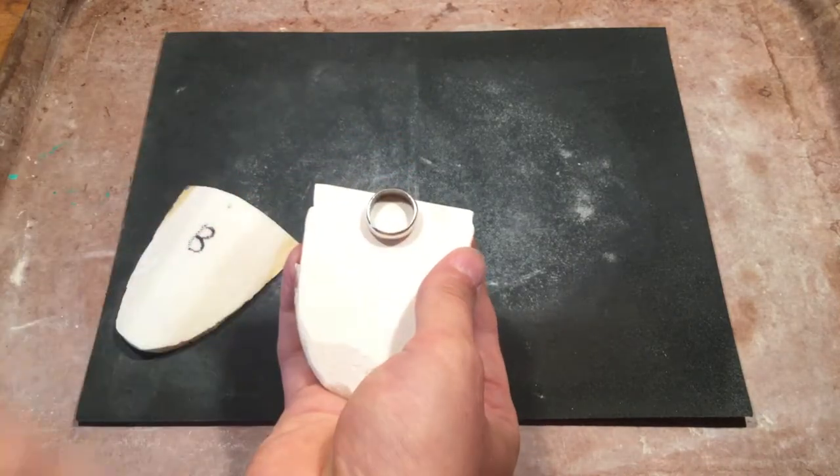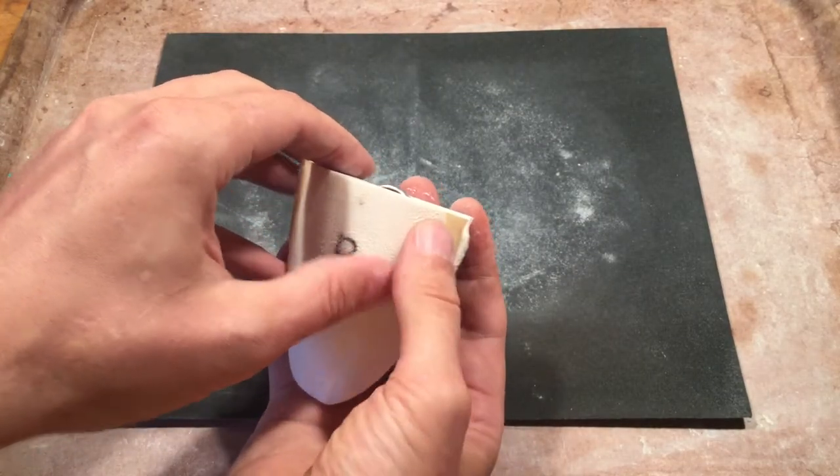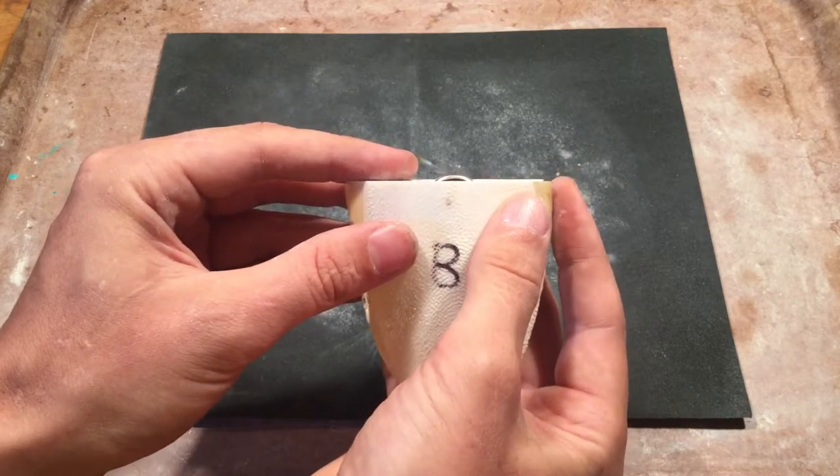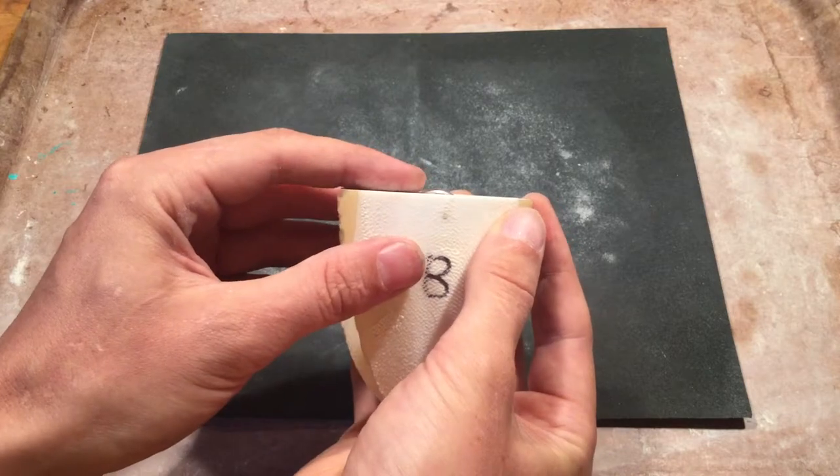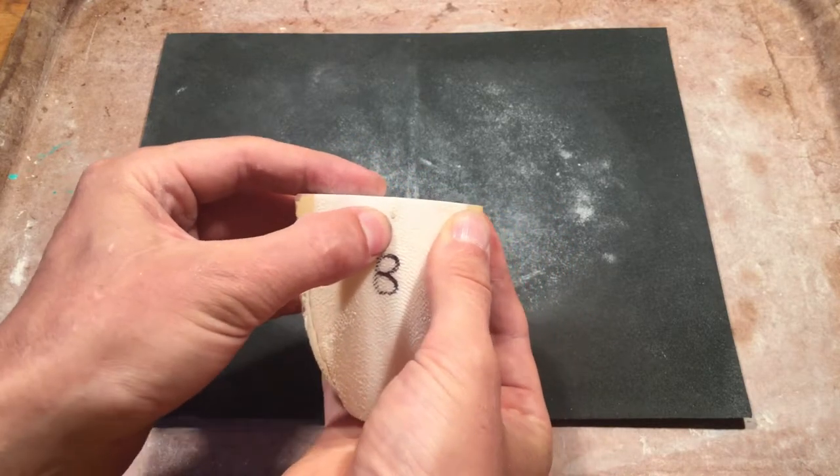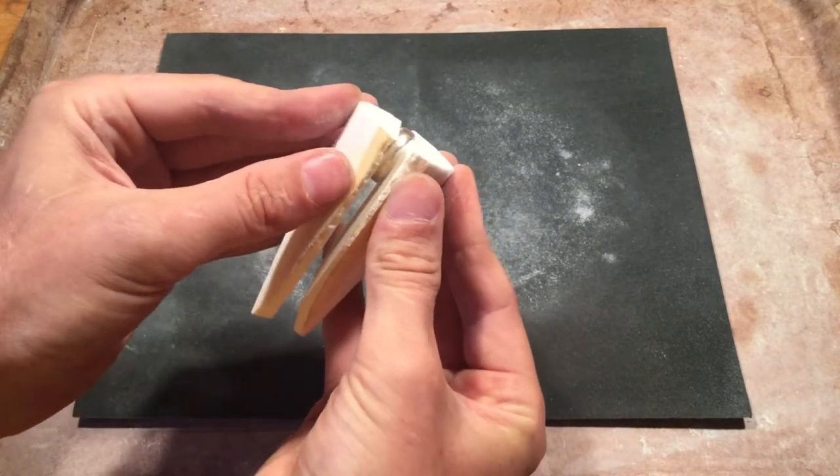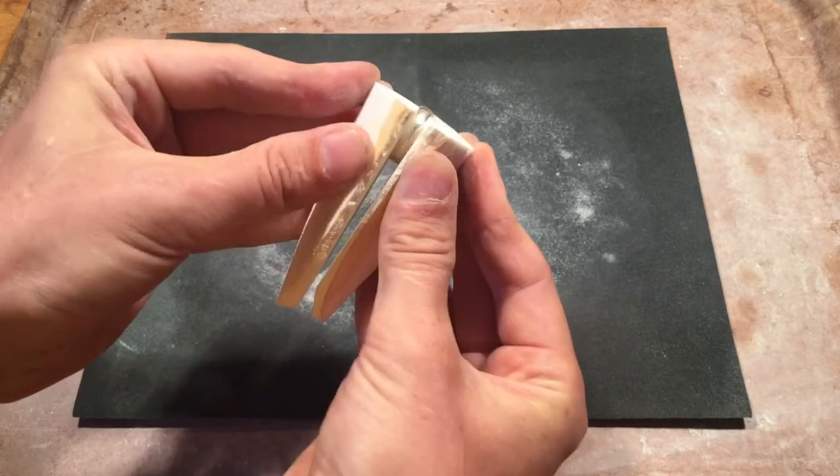What I'm doing is I'm just gently pressing in the ring mold, and then I'm registering from the front face so that they're perfectly aligned, and I'm just gently pressing the ring into place.